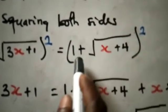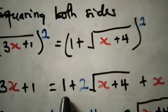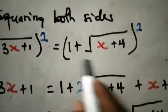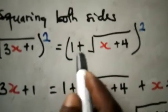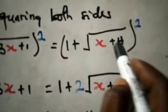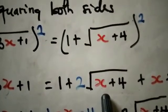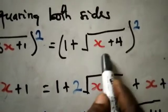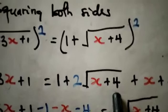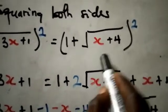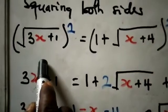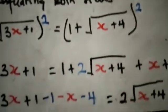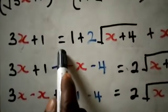Expanding the right side using (a+b)² = a² + 2ab + b²: squaring 1 gives 1, then 2 times 1 times √(x+4) gives 2√(x+4), and squaring √(x+4) gives x+4. So the right side becomes: 1 + 2√(x+4) + (x+4).